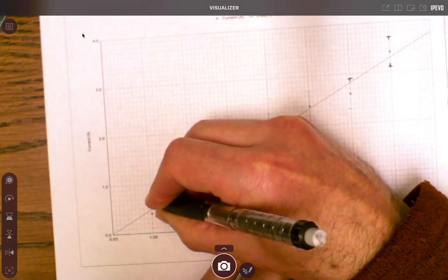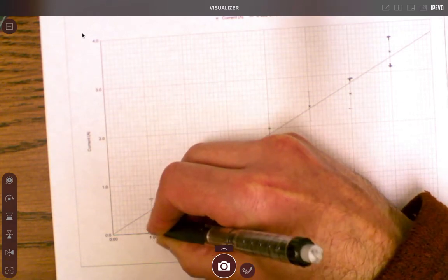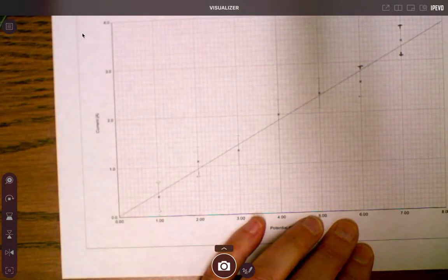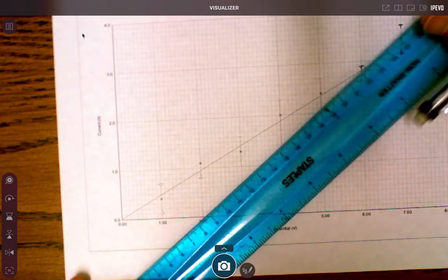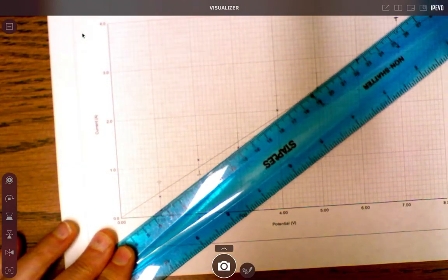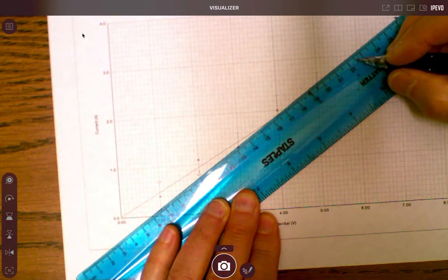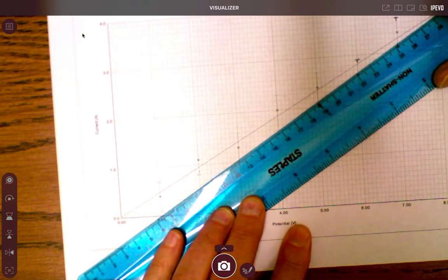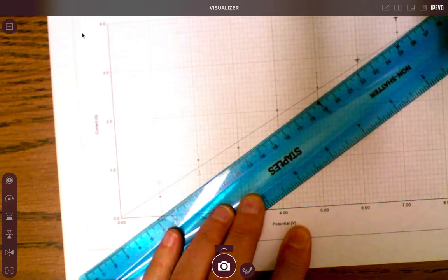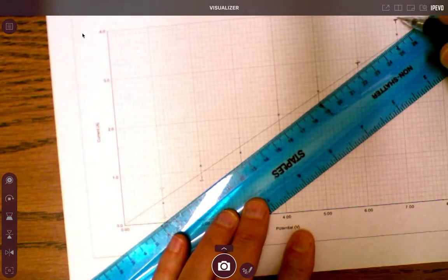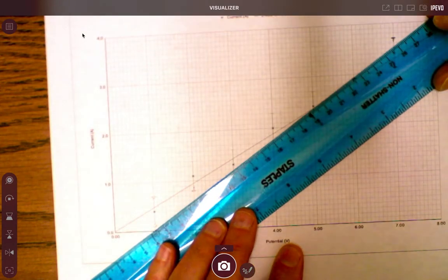Now watch what happens if I try to do the most steep one here. Notice that I'm missing this guy right there. I'm missing that error bar right there, so I can't just do this one to that one. I can't just do that.